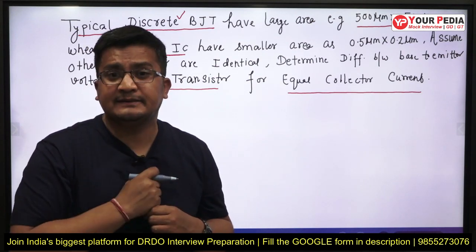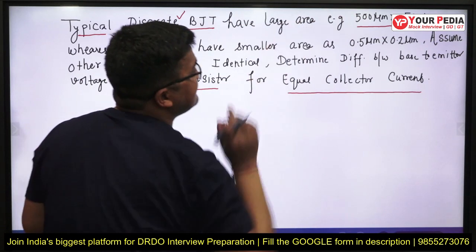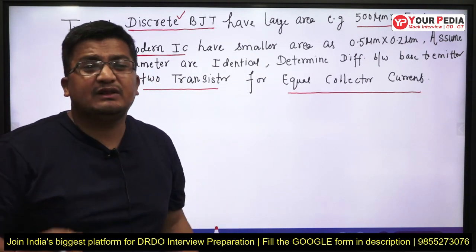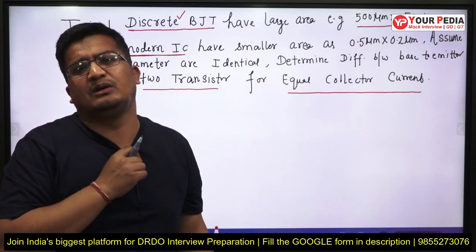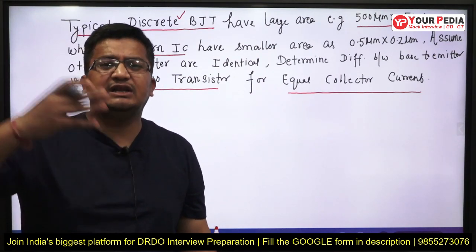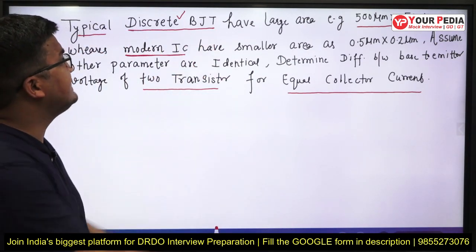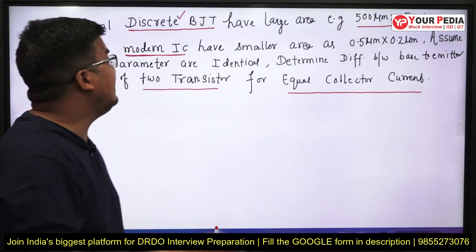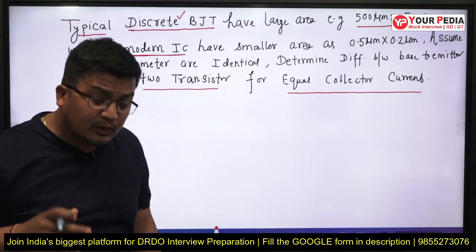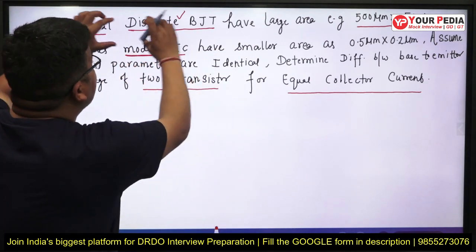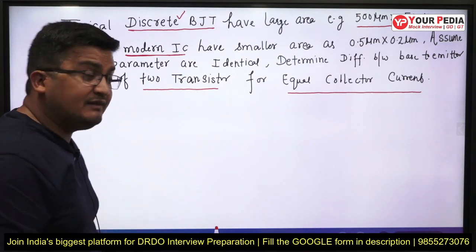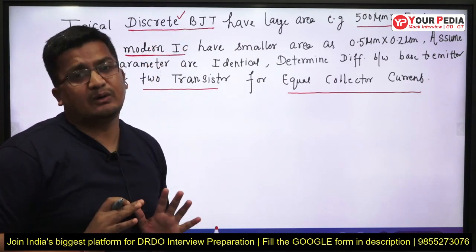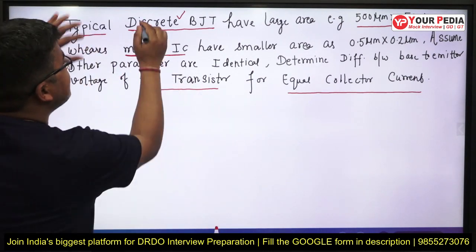A discrete BJT has a large physical size. As technology progresses, electronic devices become smaller and smaller — that is the advancement of technology. A discrete BJT's physical size is much larger compared to an integrated circuit BJT, because the size of components in an IC is drastically reduced by technology, and we keep progressing toward further reductions. That is essentially the purpose of mentioning these two types of transistors.